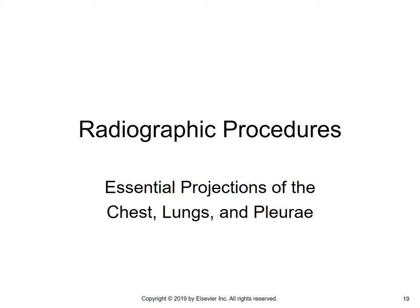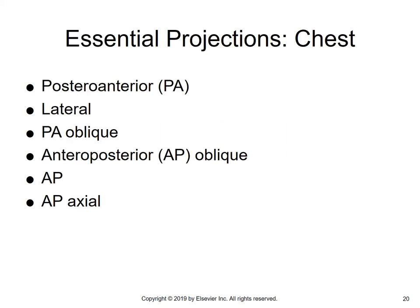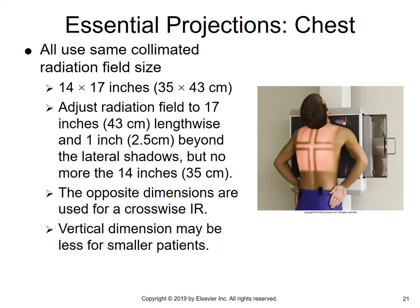Let's move on to essential projections for the chest, the lungs, and the pleurae. Our essential projections include a PA, a lateral, obliques — PA obliques or AP obliques — AP if needed, and then an AP axial, which would be your lordotic position. Let's start out learning how to radiograph the chest.